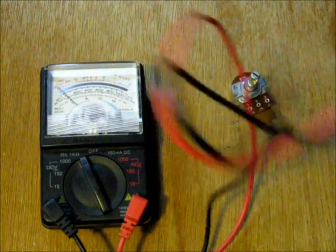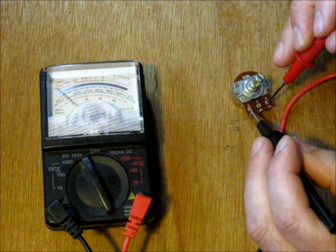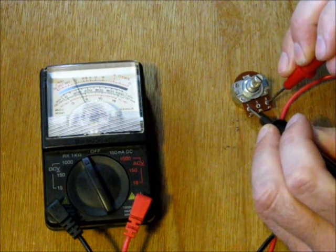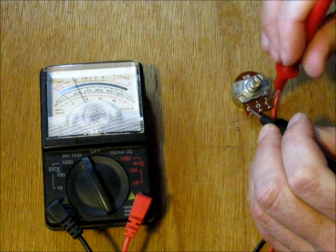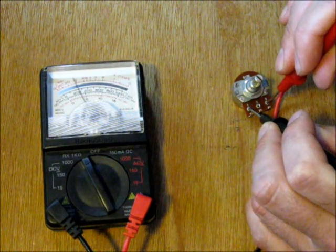So to measure this resistor, you would go to the two outside leads to get the full reading, and the meter is showing 10. So 10 times 1,000. This is 10,000 ohms.